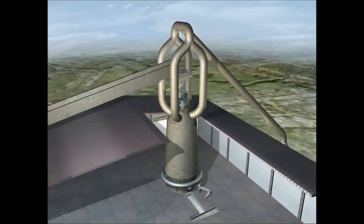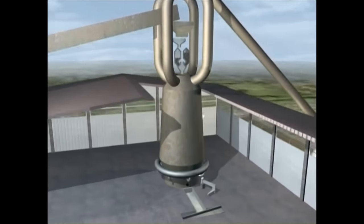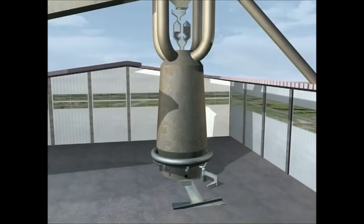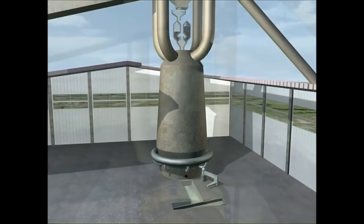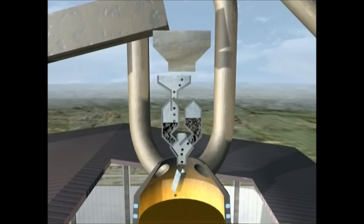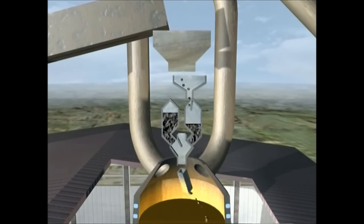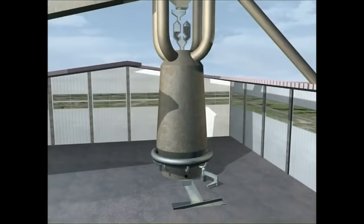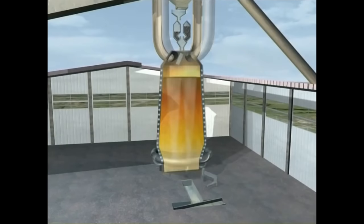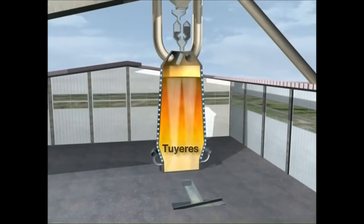These raw materials — sinter, iron ore and coke — meet each other at the blast furnace, where they are fed into the top of the furnace along with some limestone. A hot air blast, from which the furnace gets its name, is injected through nozzles, called tweers, in the base of the furnace.